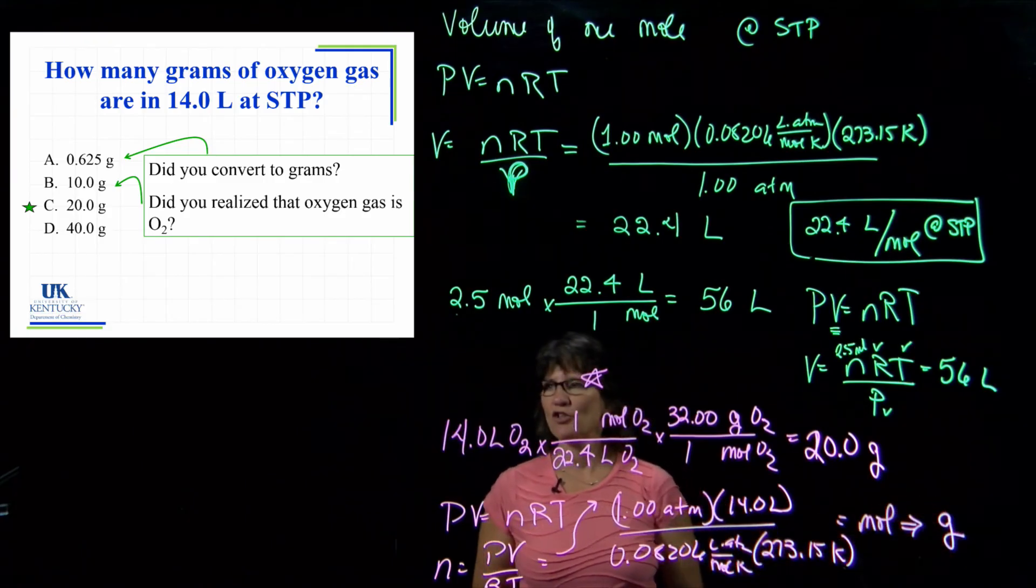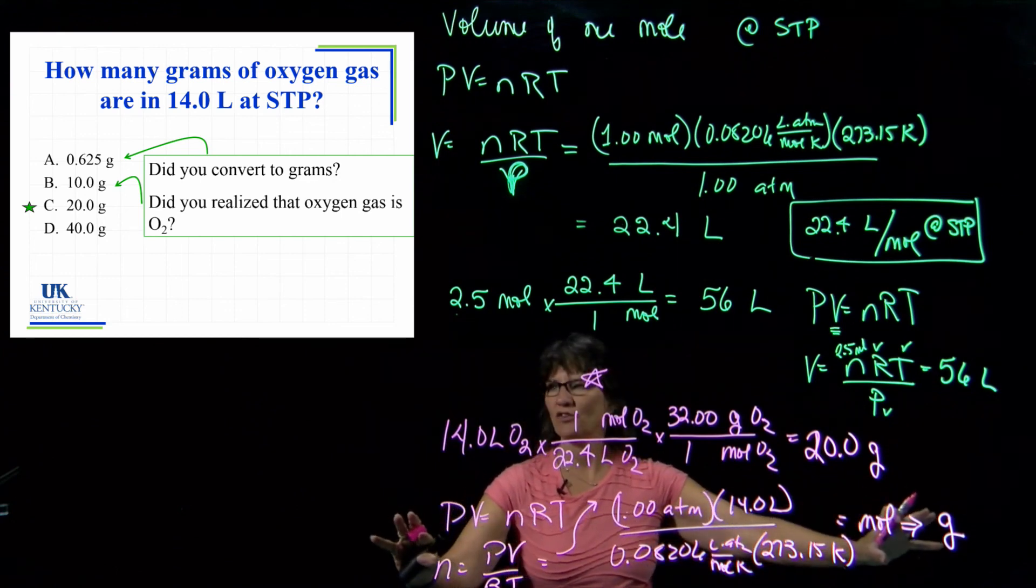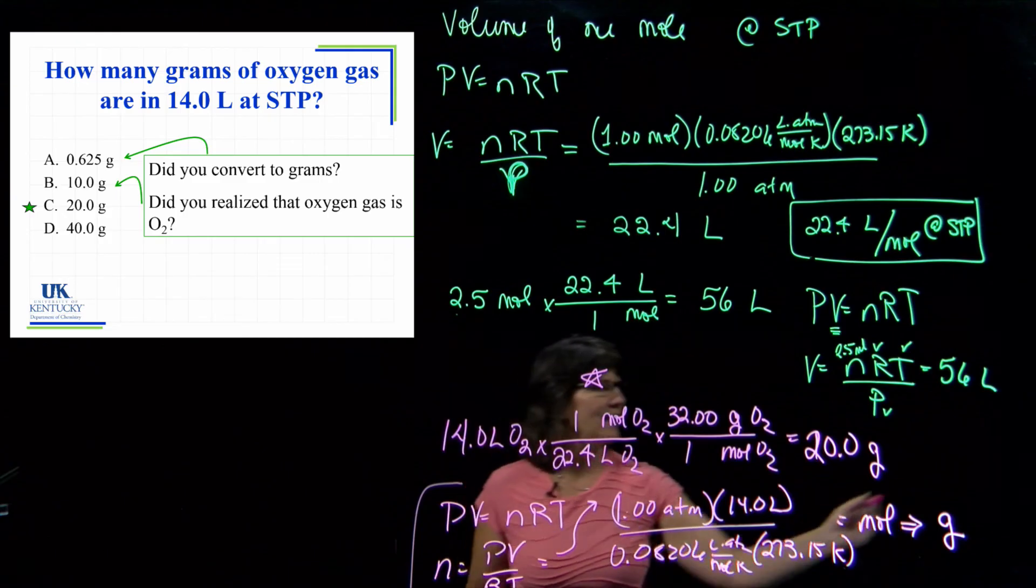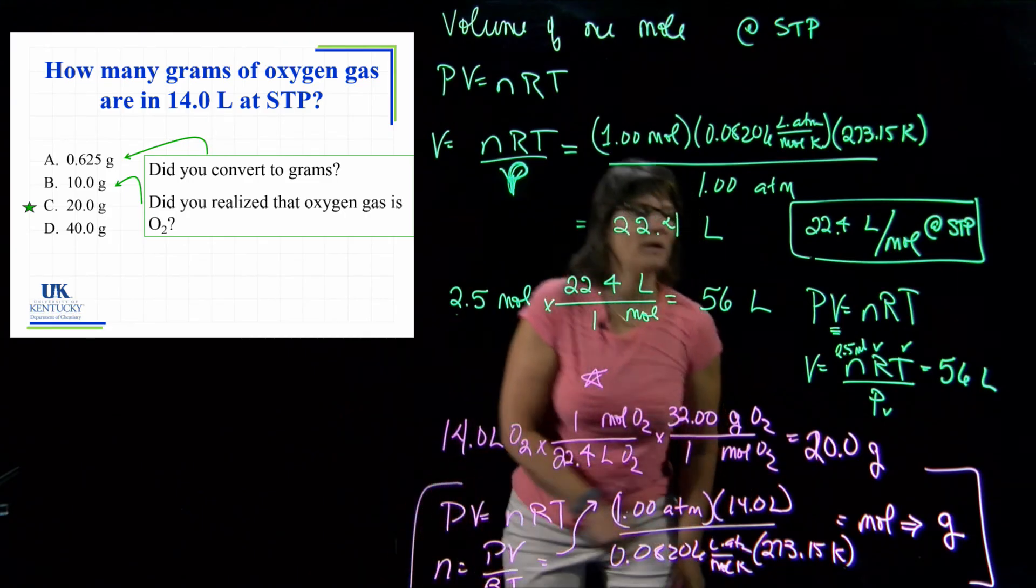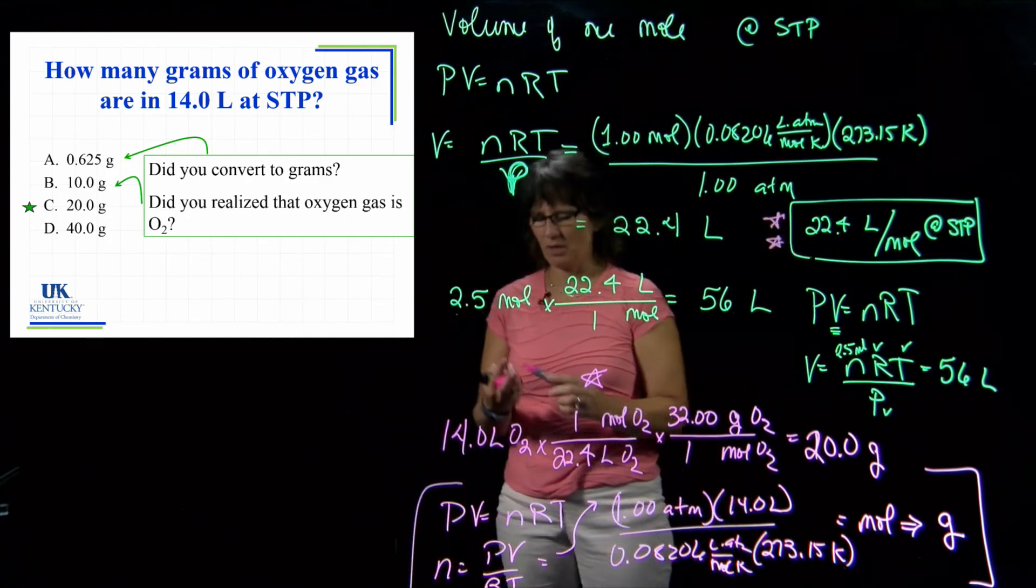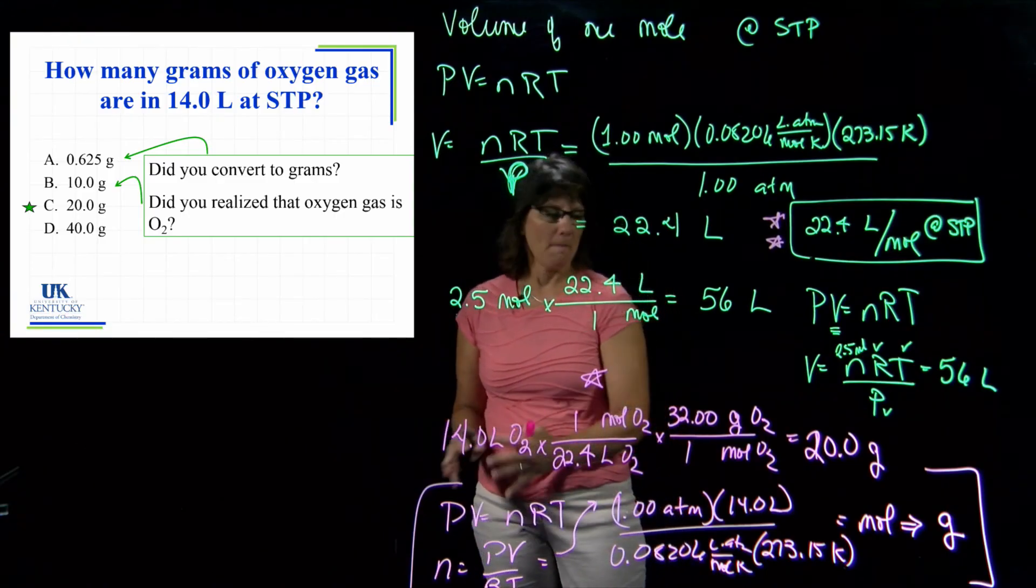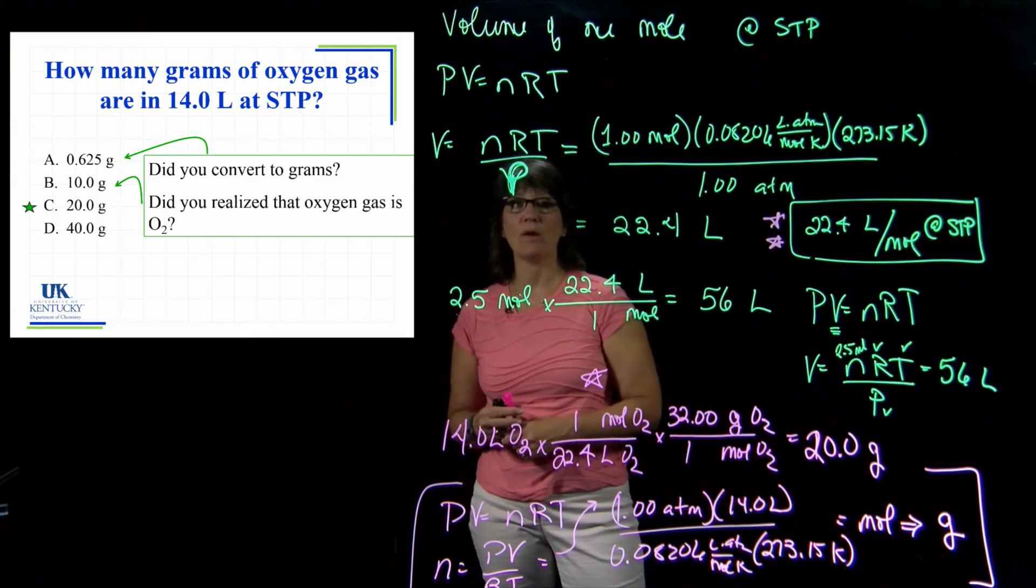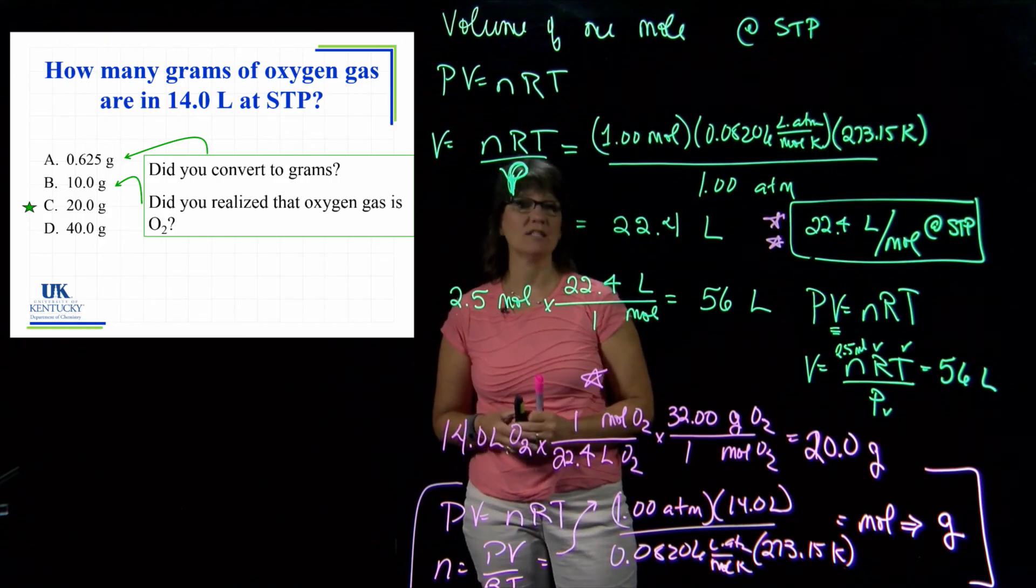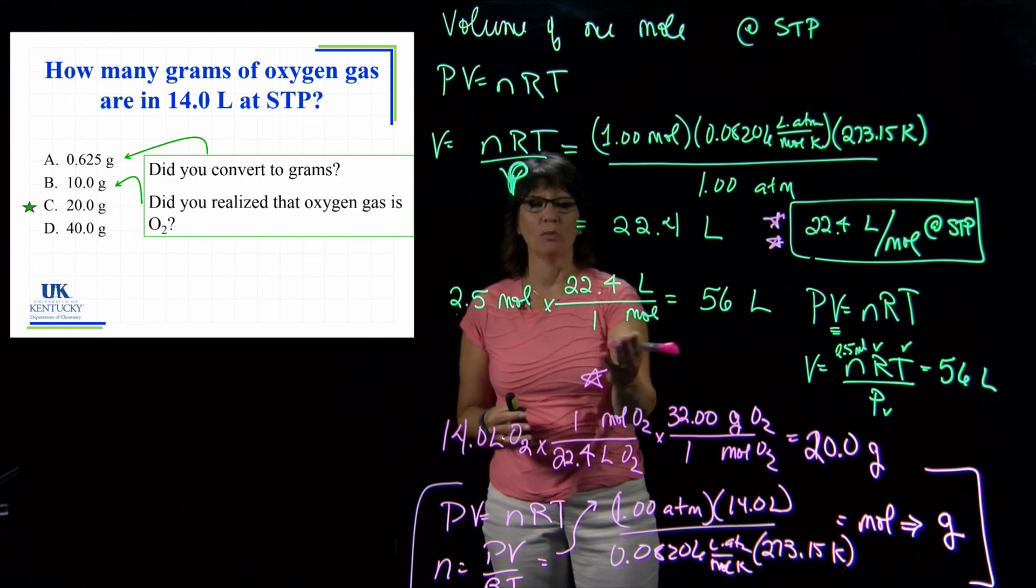Using PV equals nRT, we can do the same work, but notice this just takes a little bit more writing. It takes a little bit more time to do it this way, but the advantage is you're not memorizing a little piece of information. It saves you time if you memorize this number, but there's no reason that you have to. This is the third thing that we have learned about using PV equals nRT: the idea of molar volume and how to use molar volume to solve problems.